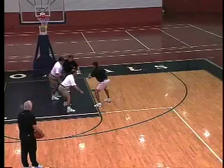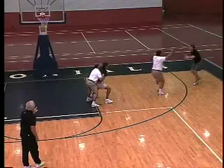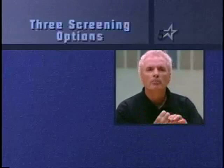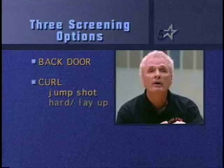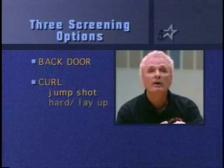Watch that entire movement. We have a screen, we have a defensive man cheating, we have a bump, we have a jump shot, or we have a post up. As the defender cheats, we bump, we drop step — there's your pass, shot, or dump down. Always make sure that the player coming off the screen has three avenues: back door, curl jump shot, curl hard layup. Number three, a bump. Always read the defender — it's not how fast you come off the screen, it's how you read the defense.